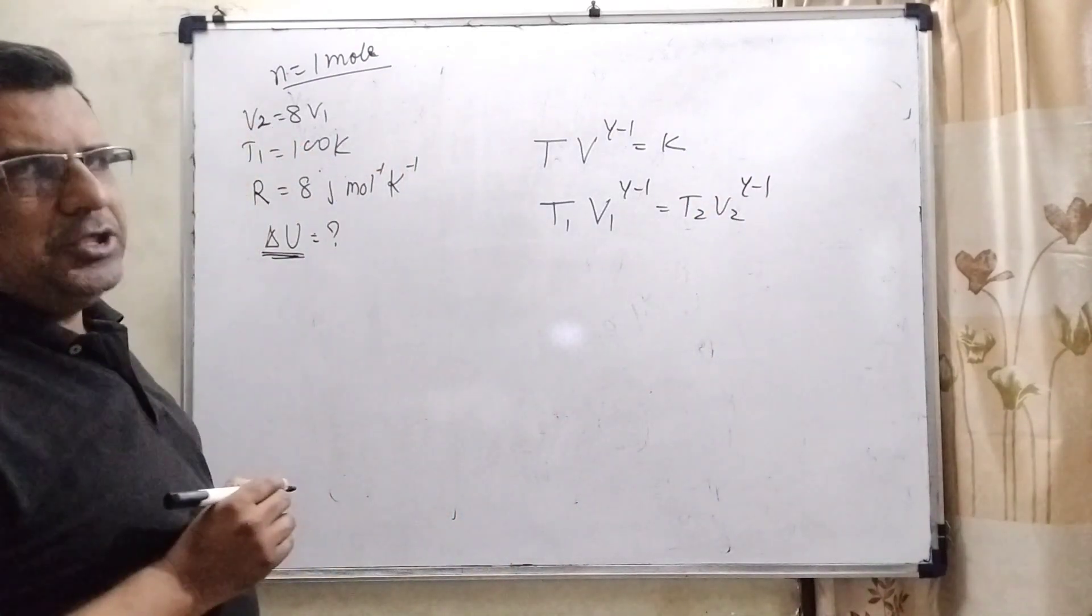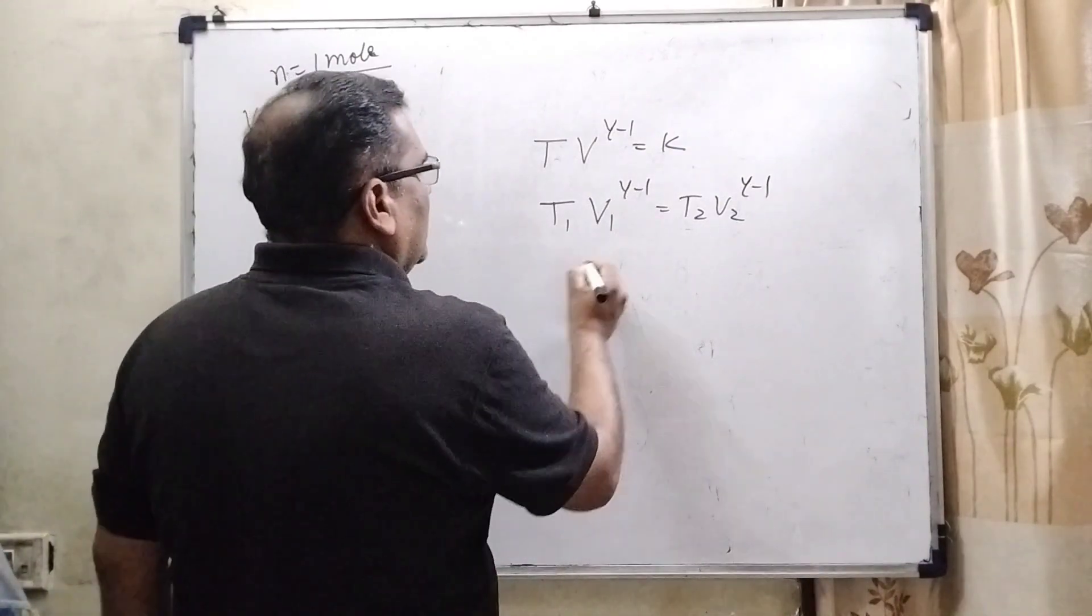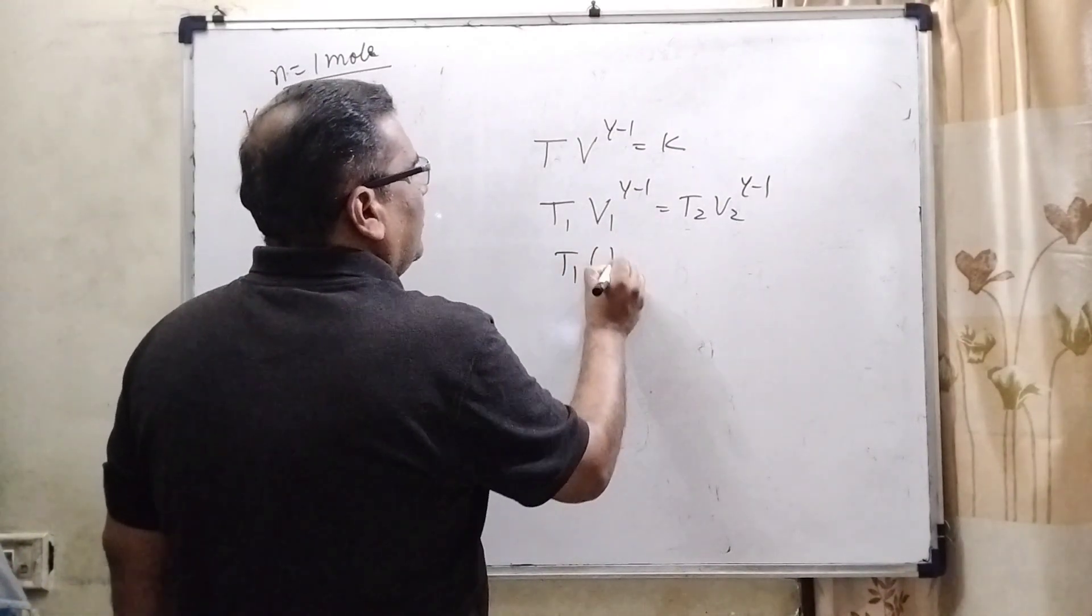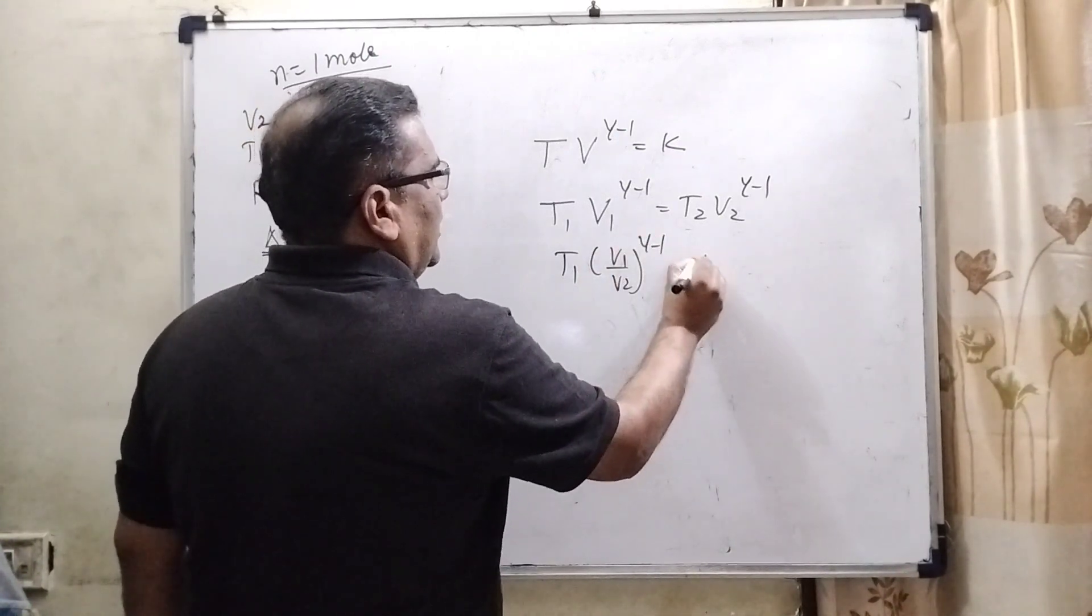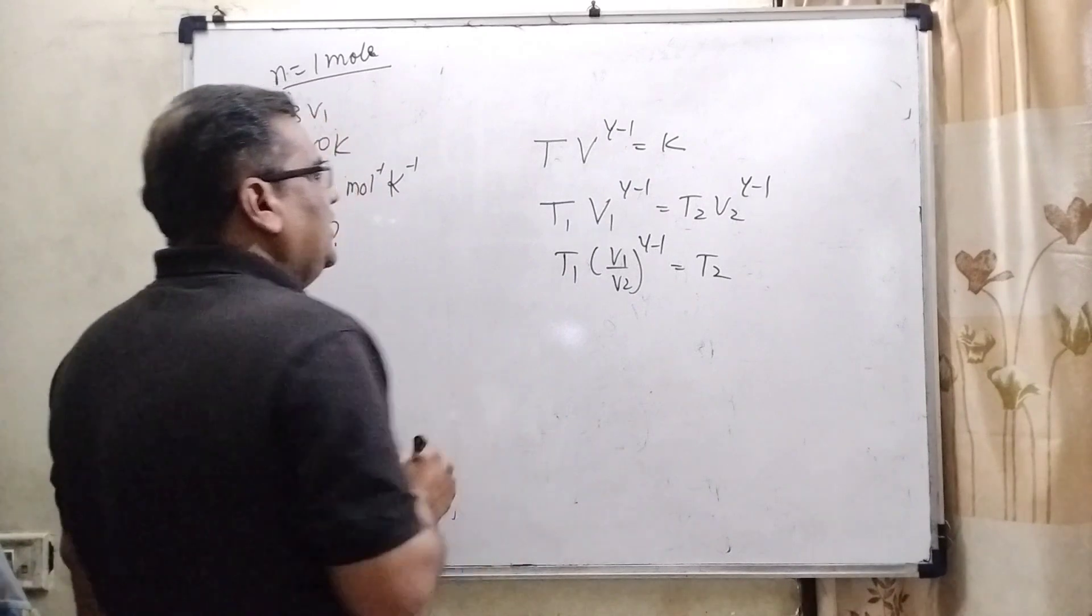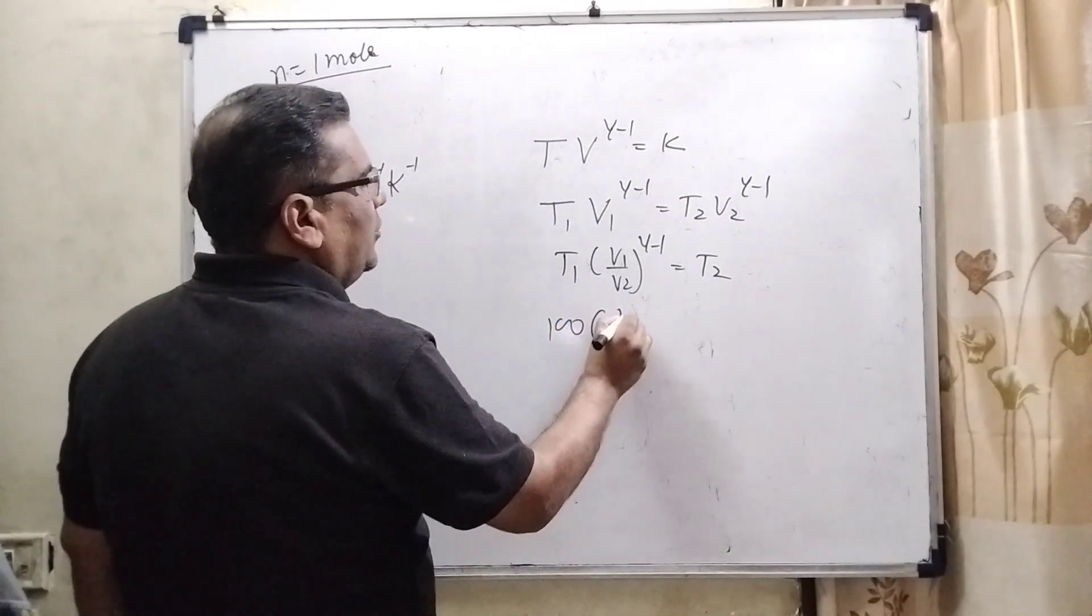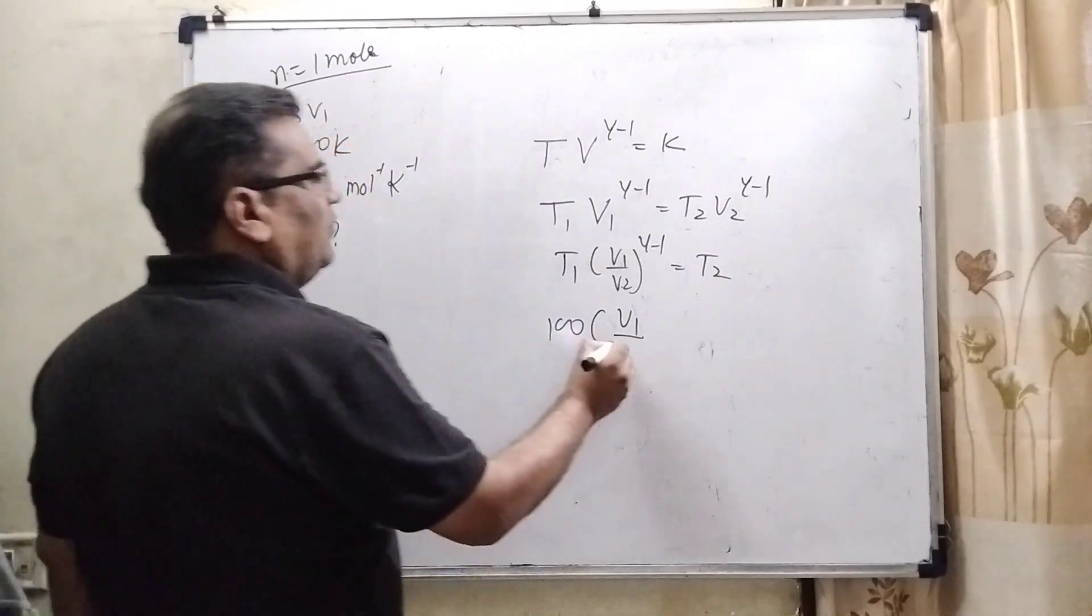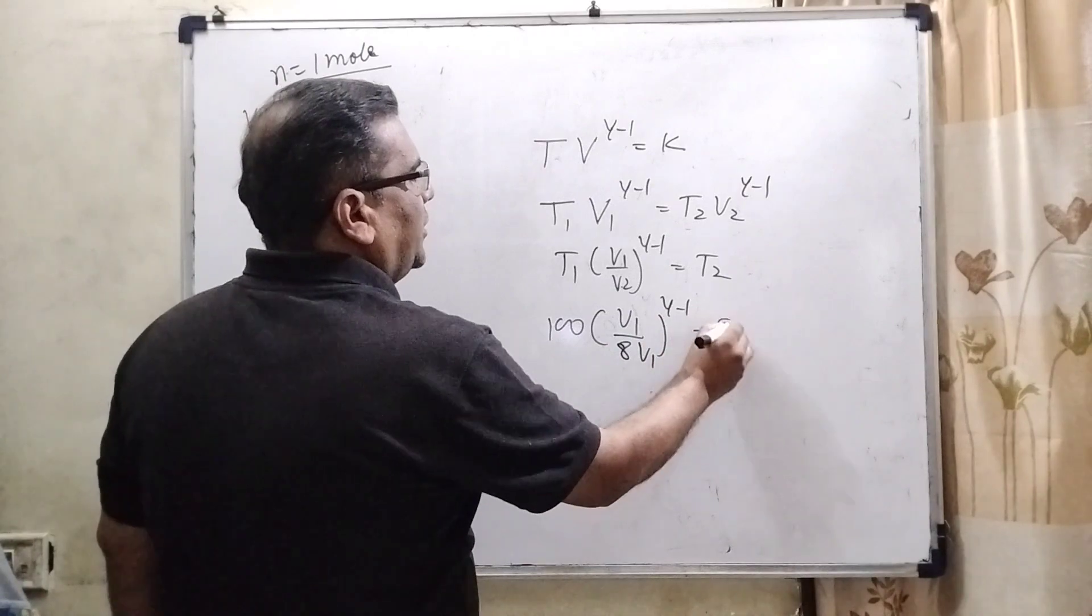Here gamma is the ratio of Cp upon Cv. So here in this case T2 equals T1(V1/V2)^(γ-1). Here T1 is given 100 Kelvin. V2 is 8 times of initial volume means 8V1.